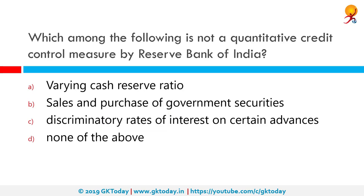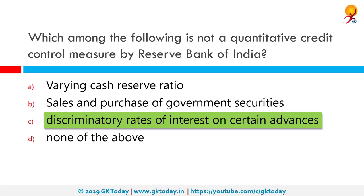Which among the following is not a quantitative credit control measure by the Reserve Bank of India? The correct answer is discriminatory rates of interest on certain advances. Credit control is an important tool used by RBI — a major weapon of monetary policy — used to control the demand and supply of money and liquidity in the economy. Such methods are used by RBI to bring economic development along with stability.